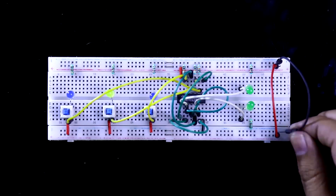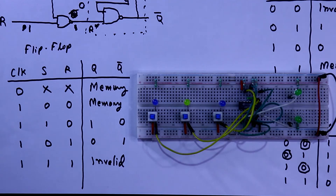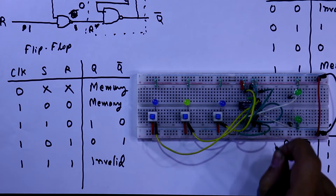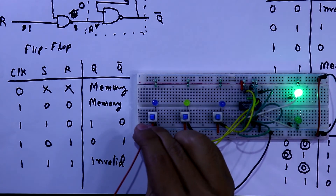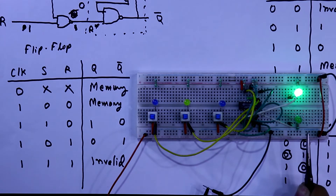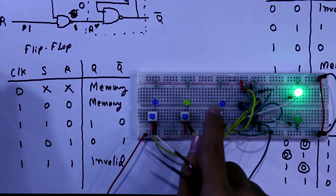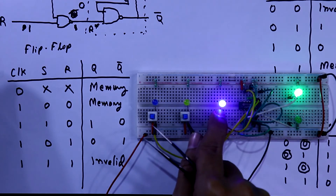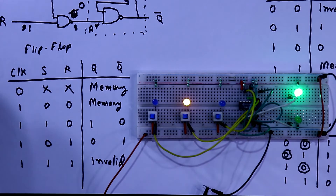Now we will verify the truth table of the SR flip-flop. Here is the truth table. I'm connecting the 5 volt power supply — negative and positive. Now Q is glowing and Q-bar is turned off. Clock is zero, so now it is in the memory state. If clock is zero the output will not change. Now clock is one.